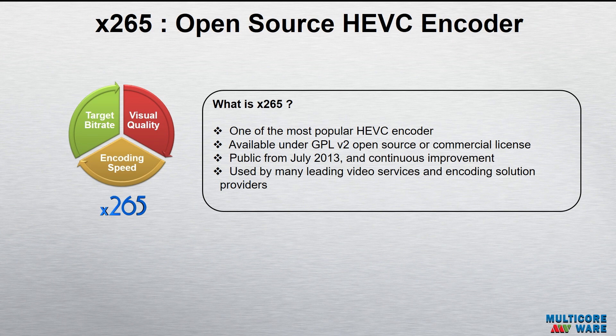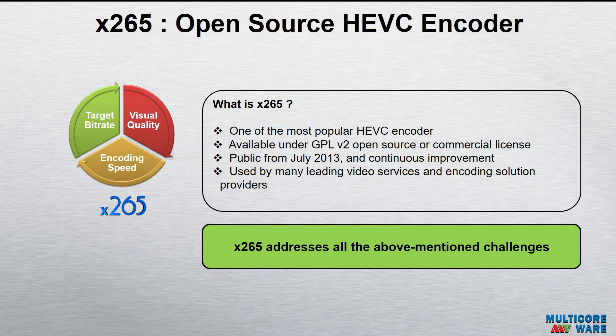In terms of x265, as you know, it's one of the most popular HEVC encoders today, and it is an open source encoder. It's available under GPL version 2 open source and commercial licensing. It has been public since 2013, and we're continuously working on it. It is used by many leading video services and encoding solutions, including OTT and others. x265 can address all three — target bit rate, visual quality, and encoding speed — to a good extent. The rest of my presentation covers how x265 achieves all these things.